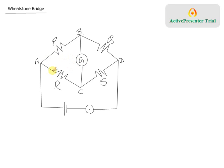Now, why we are so interested in this circuit is: suppose points B and C are at the same electric potential. If point B and C are at the same potential, what will happen? A is at some potential V_A, and D is at some potential V_D.